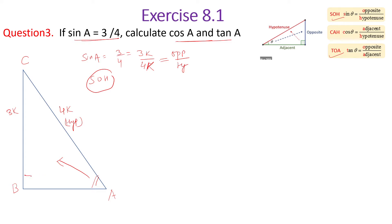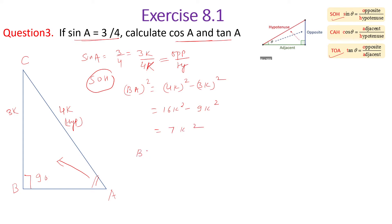The right angle is at B, so we need to find side AB using the Pythagorean theorem. AB squared equals 4k squared minus 3k squared, which is 16k squared minus 9k squared, giving 7k squared. Therefore AB equals root 7k — positive, since a side cannot be negative.